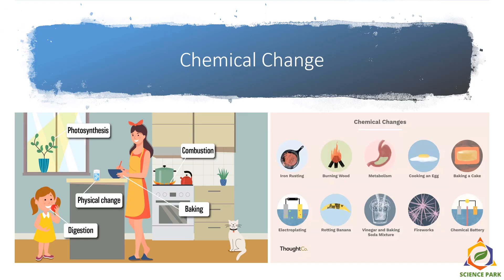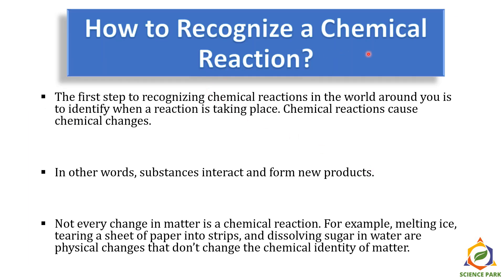What are chemical changes? We always come across certain things in our daily chores like photosynthesis — plants do photosynthesis, and that is a chemical change. Digestion is a chemical change. Baking, cooking, combustion are all chemical changes. Other examples include iron rusting, burning wood, metabolism, cooking an egg, electroplating, rotting bananas, vinegar reacting with baking soda, and fireworks — everything is a chemical change.